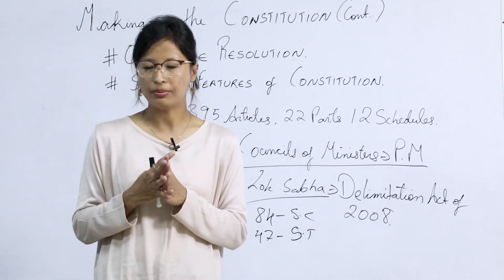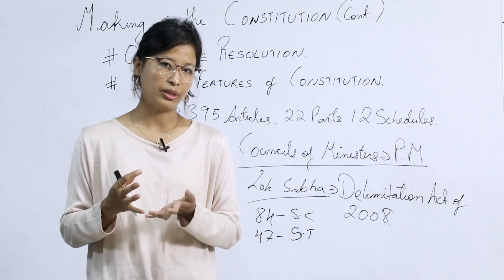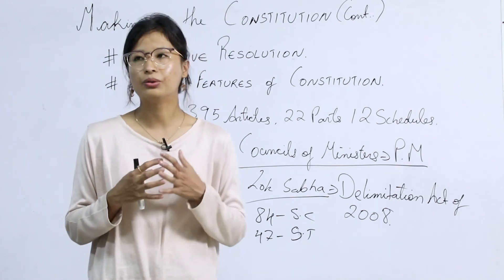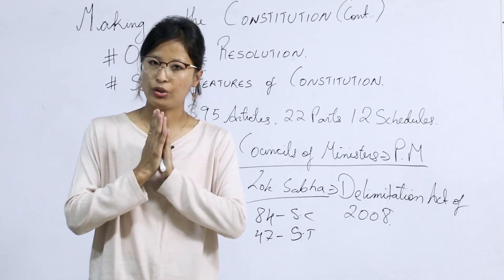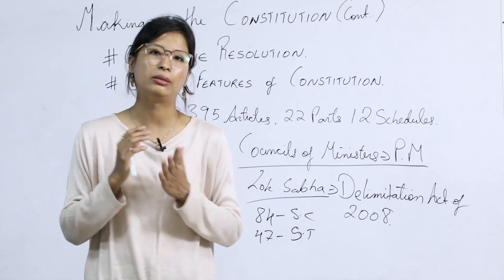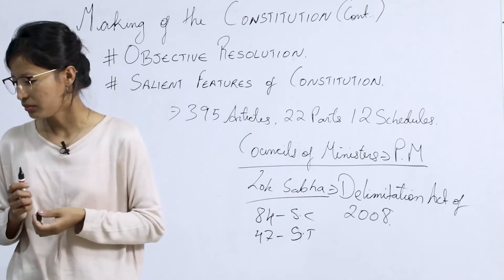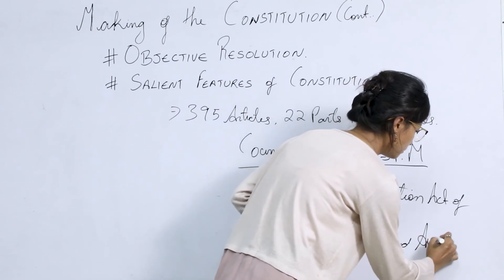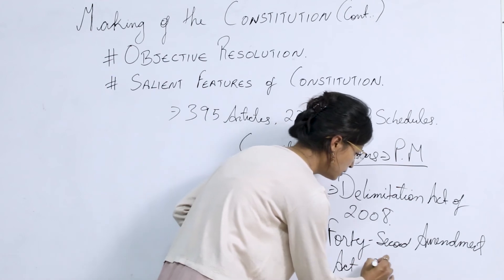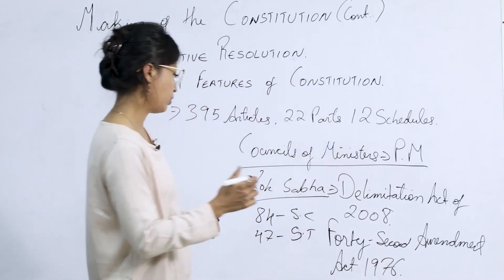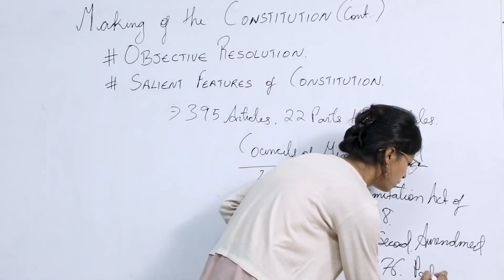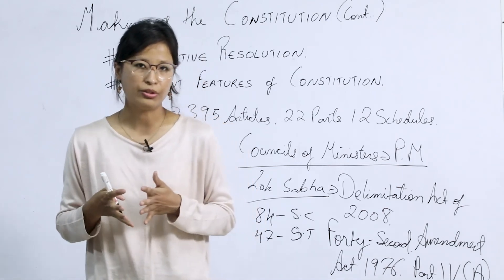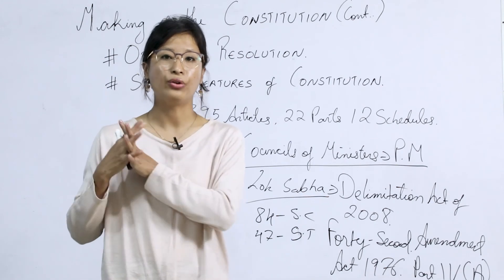Point number eight: fundamental rights and fundamental duties. The Constitution provides fundamental rights divided into six categories. These rights are justiciable and enforceable in any court of law — if your rights are violated, you can approach any court. The 42nd Amendment Act of 1976 added a new Part 4A dealing with fundamental duties.